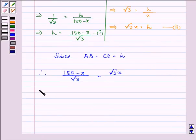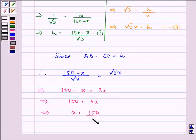Further on simplifying, we have 150 minus X is equal to 3X, that is 150 equal to 4X, that is X is equal to 150 upon 4.